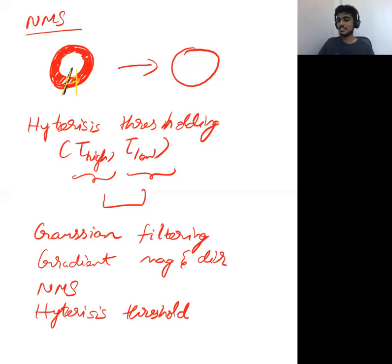These are the four steps in Canny edge detection algorithm. Canny edge detection algorithm is one of the most popular and successful edge detection algorithms which exists even today.